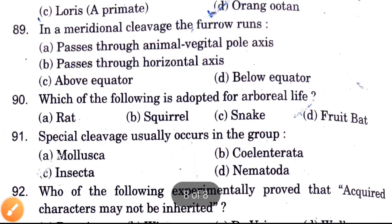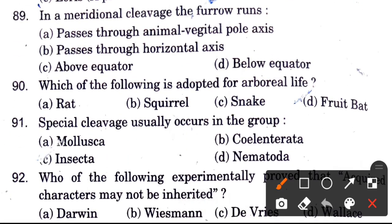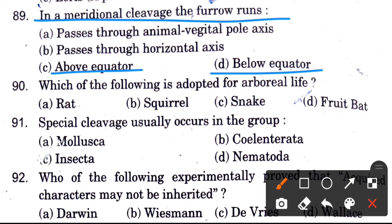In meridional cleavage, the furrow — options are passes through animal vegetal pole axis, passes through horizontal axis above equator, and below equator. The answer is passes through animal vegetal pole axis.